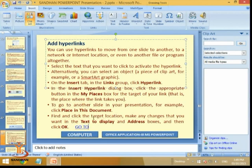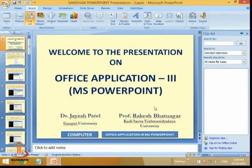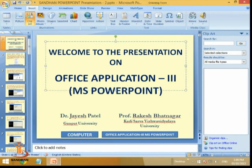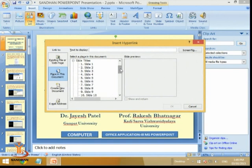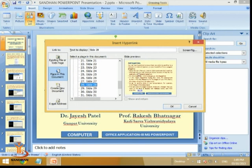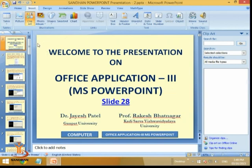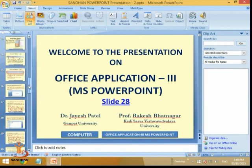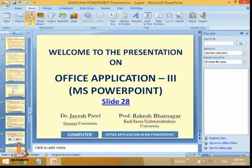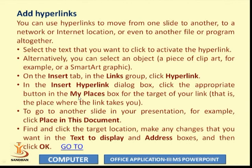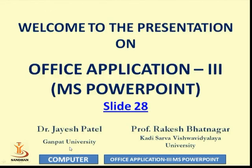The same thing can be repeated on the first slide — adding a hyperlink with 'Place in This Document,' selecting slide 28 (the Add Hyperlink slide), and clicking OK. Moving to slide 28 and pressing Shift+F5 to preview: on the hyperlink slide, the mouse shows as an arrow, but as soon as it goes over the 'Go To' text it converts into a hand pointer, indicating it is a hyperlink. Clicking it takes you to the first slide, and clicking slide 28 takes you back.